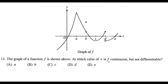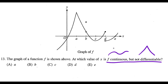For question 13 we need to know continuous but not differentiable. Continuous means you can draw it in one motion. Differentiable means it's smooth, so not differentiable means a sharp turn. Looking at the graph, at x equals a the function is continuous — drawable in one motion — but has a sharp turn, so it's not differentiable there. That's choice A.